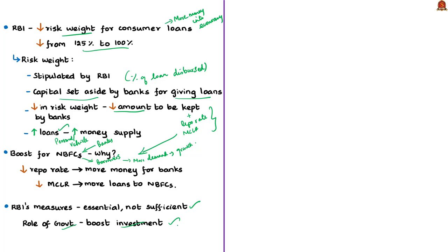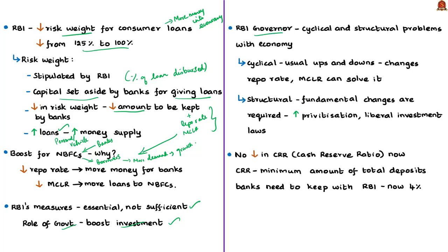The RBI governor Mr. Shaktikanta Das, in an interview, and the editorial's author, both state that the economy faces cyclical and structural problems. Cyclical problems are the general ups and downs in every economy, and measures like policy rate cuts and MCLR reductions address these recurring cyclical issues. The RBI governor has accepted that there is room for structural reforms in the Indian economy — structural reforms mean fundamental changes like investment-friendly laws and more room for privatization.